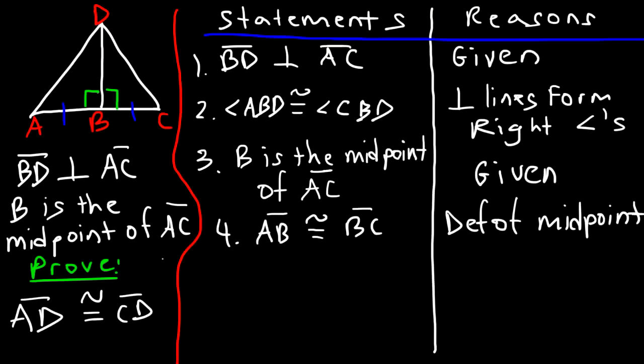Now what else can we say? What else do we need to prove that the two triangles are congruent? Notice that triangles ABD and CBD share a common side, and that side is BD.